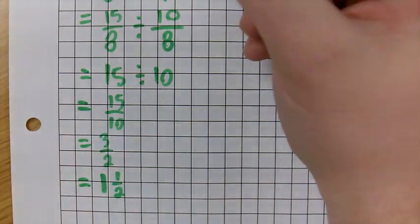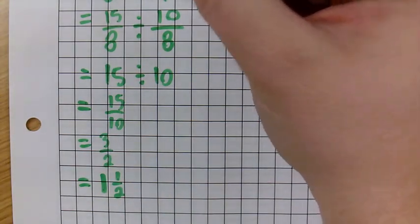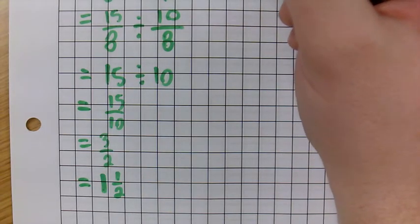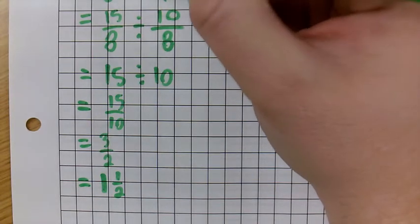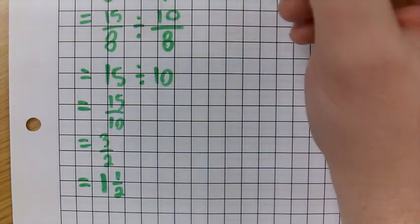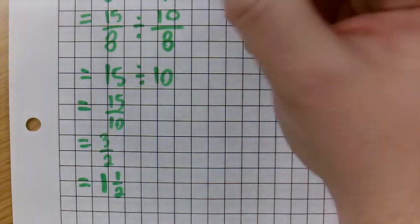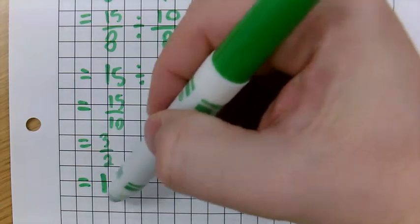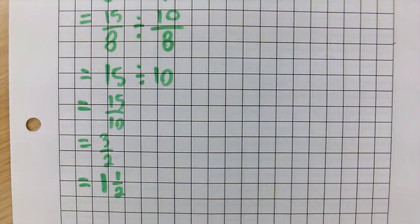And if we were to estimate, this is approximately, you know, 2, it's a little less than 2, this is approximately 1, but it's more than 1. So we have not quite 2 divided by more than 1. We'd expect it to be in between 2 divided by 1 and 1 divided by 1, which 1 and 1 half is right in the middle of that. So this works.